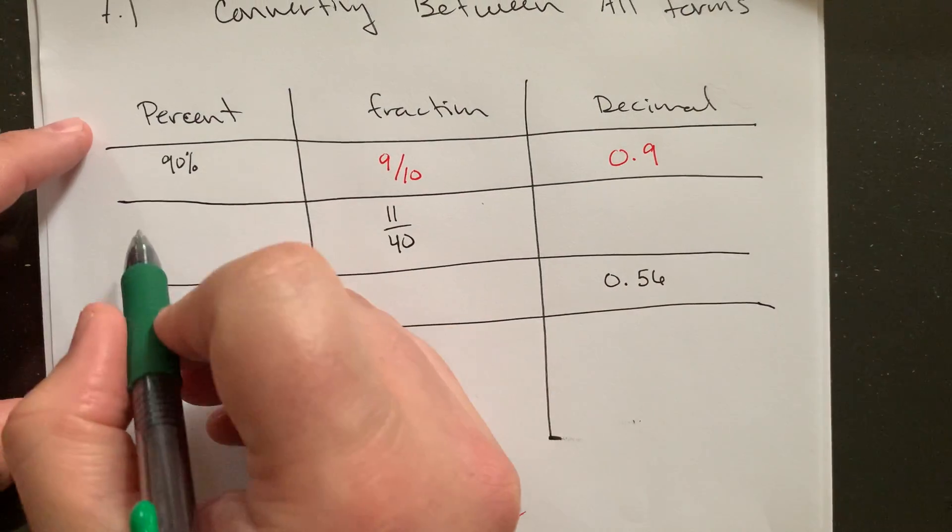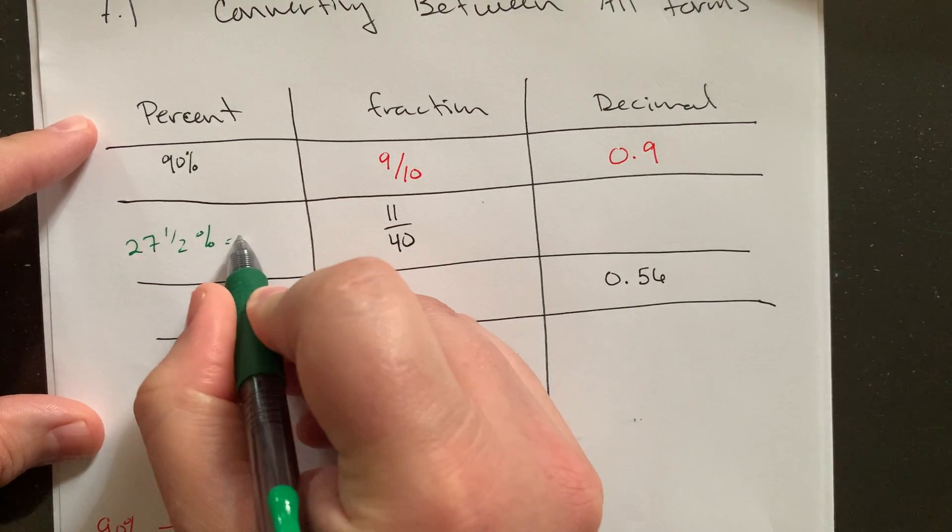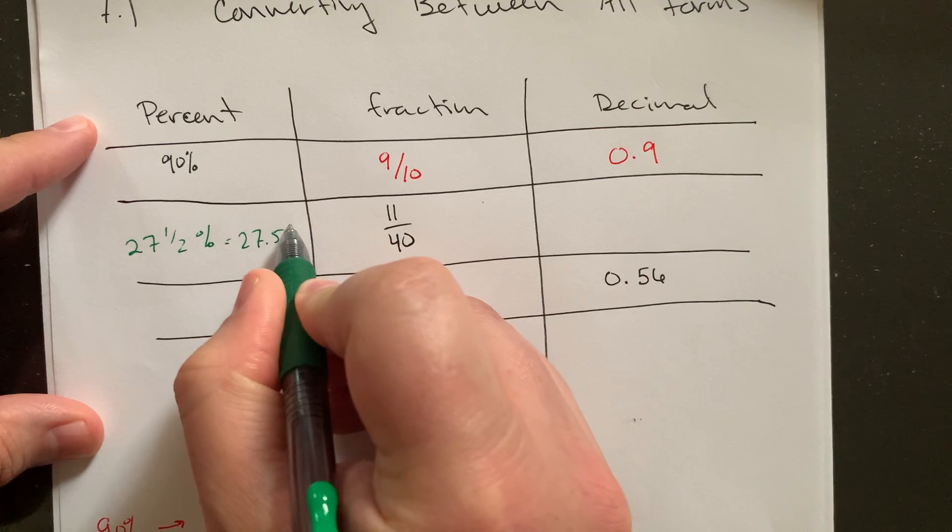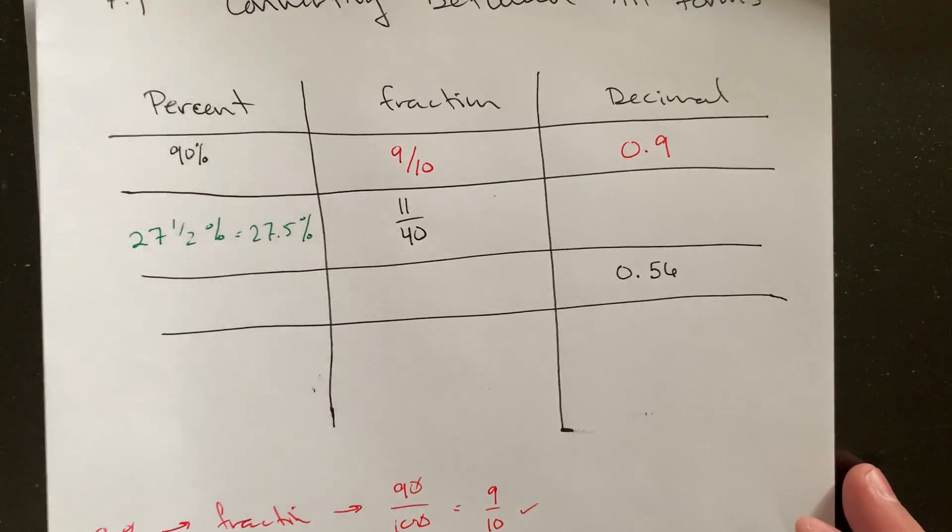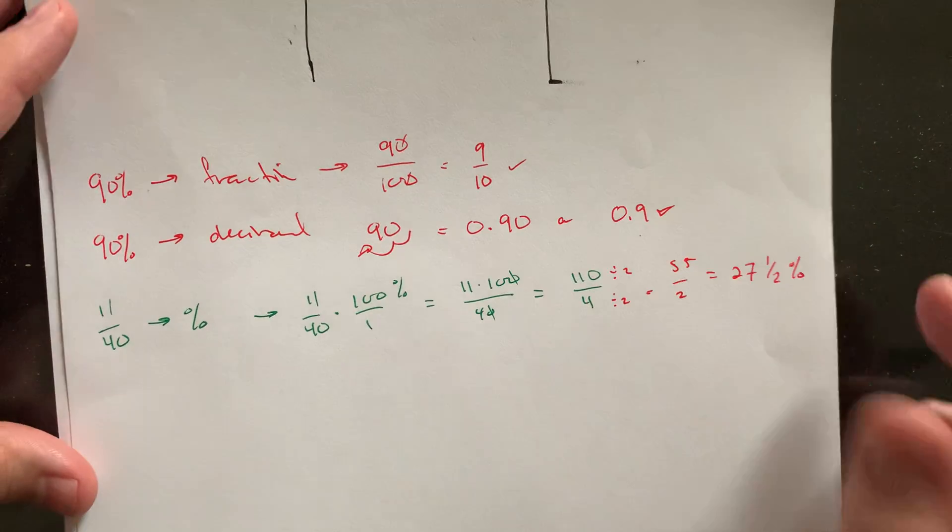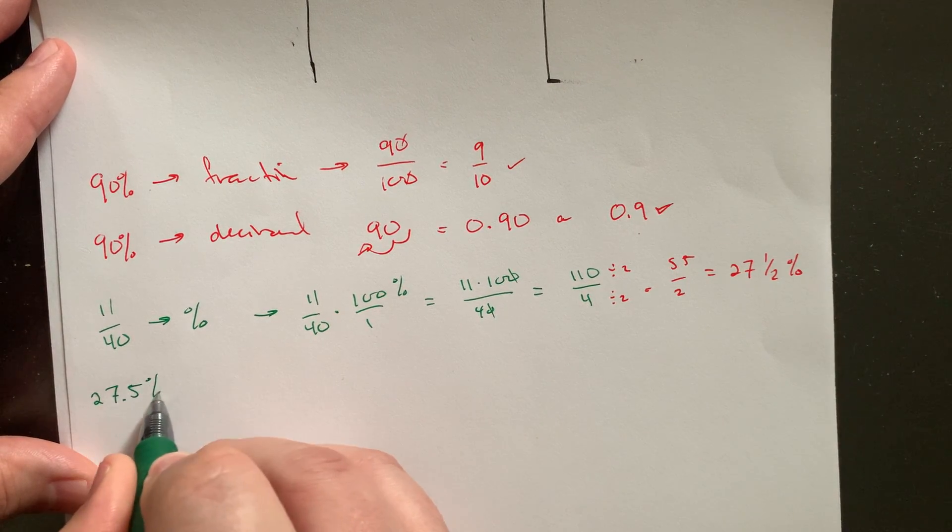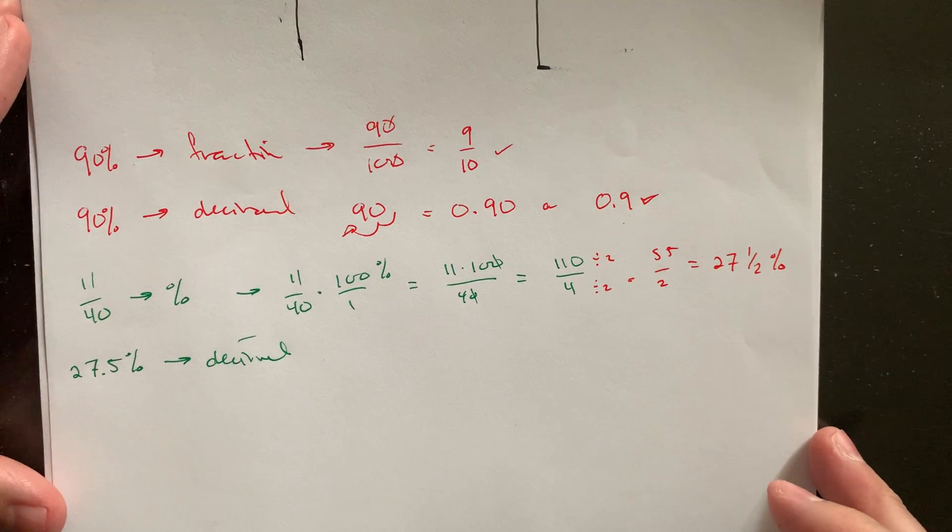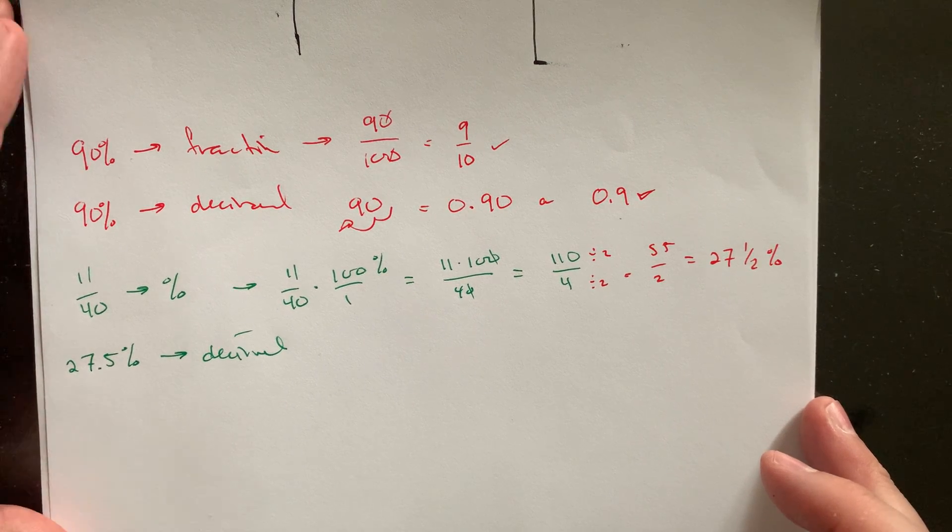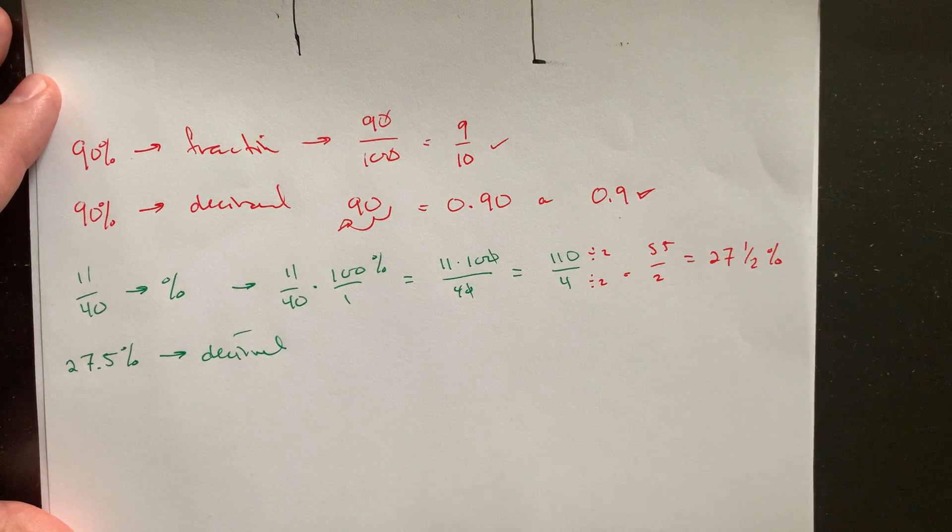So we can fill that in here. One half percent, or 27 kind of 0.5. That 27.5%, let's use that to get the decimal version. So the idea here is, once you get from one form to another, you can then use that to get to the third form if it's more convenient. Percent to decimal back and forth is definitely the easiest conversion we have to do.